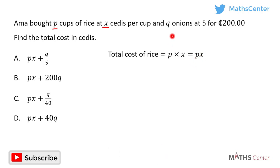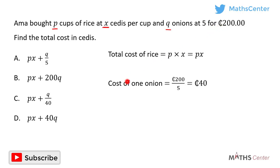Now for the onions — she bought kale onions, so the number of onions she bought was kale. The onions cost five for 200 CDs, meaning five onions cost 200 CDs. So the cost of one onion is 200 divided by five, which is 40 CDs. One onion costs 40 CDs.